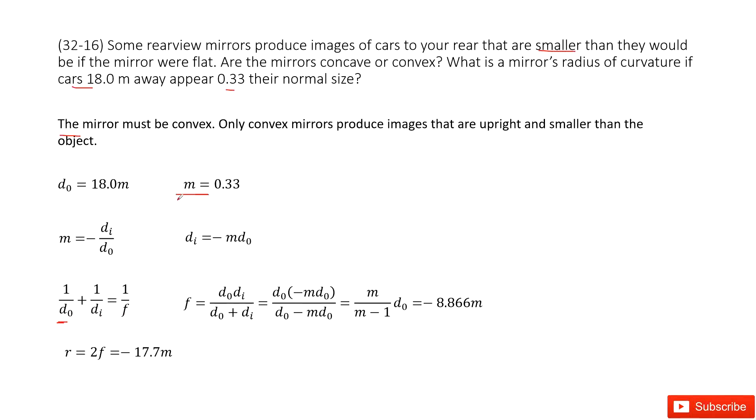Before that we can see we know the magnification. So we find the definition about magnification: m is negative di over d₀. So now we can write di as negative m d₀ and input the di inside this equation.